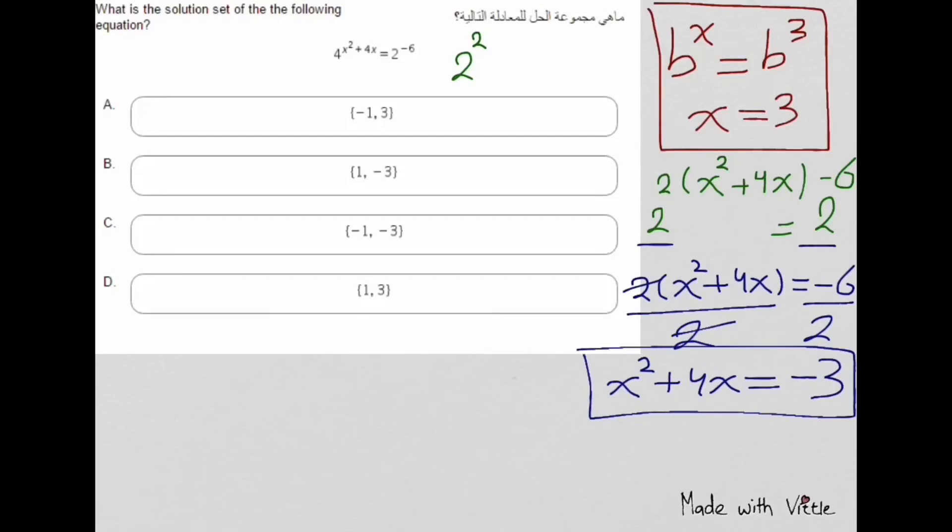The next step is to write the equation equal to zero, so negative 3 will go to the other side with an opposite sign. So we'll write it as x squared plus 4x plus 3 equals 0.